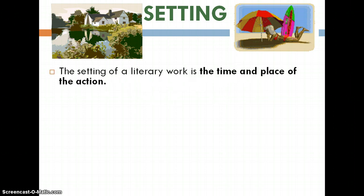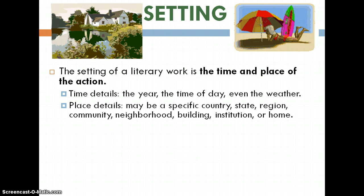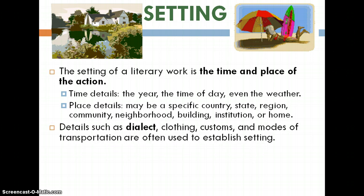Setting. The setting of a literary work is the time and place of the action. Think about time details — that's going to include the year, the time of day, maybe even the weather. The place details might be a specific country, state, region, neighborhood, or a specific place in the home. Details such as dialect, clothing, customs, and modes of transportation can all establish the setting. The events and plot can even be affected by the setting.